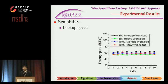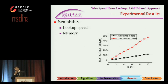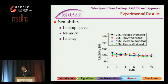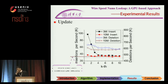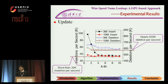We also ran scalability tests. Despite the table size, we can achieve stable lookup speed. Memory naturally increases as table size increases. Latency remains steady regardless of table size. For update performance, we can achieve more than 30k insertions per second and nearly 600k deletions per second, demonstrating very fast update capability.